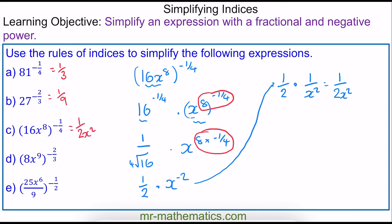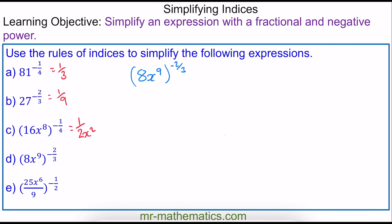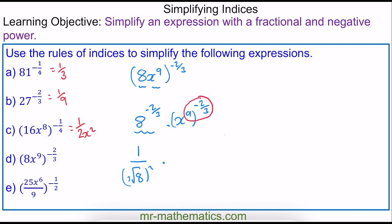Do you want to try and simplify the expressions in questions D and E? You can pause the video and resume it when you're ready. Just like with question C, I'm going to split this up — we have an 8 and x to the 9, both raised to the same power of negative 2 thirds. So this becomes 1 over the cube root of 8 squared, multiplied by — using the power rule — x to the power of negative 6. So we have 1 over 4, multiplied by 1 over x to the 6, giving 1 over 4x to the 6.